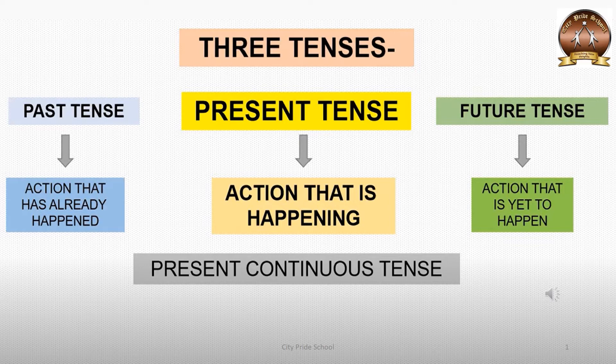Before learning present continuous tense, children we should know some basic concepts like what are verbs, what are helping verbs, and what are the basic three tenses. We have already learnt in standard 2 what are verbs. Verbs means action words. And helping verbs like am, is, are, was, were — these support the main verb to frame the sentence correctly.